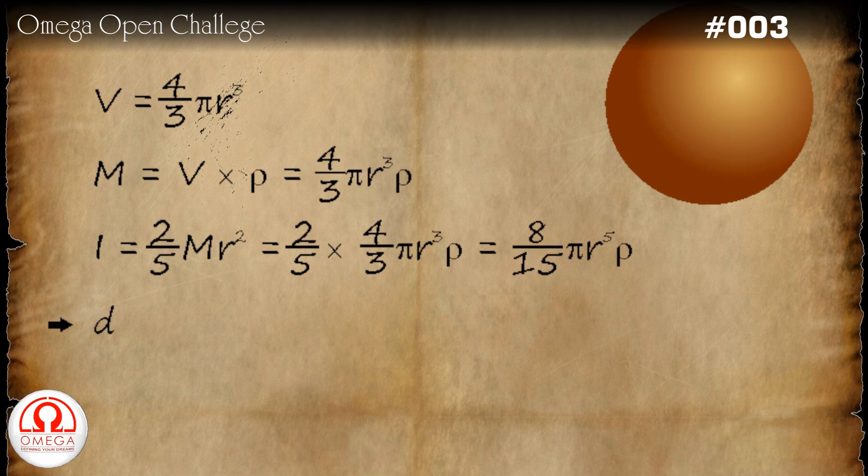Differentiating both sides, we get dI is equal to 8 by 3 pi r to the power 4 into rho dr.